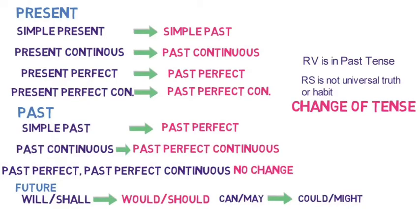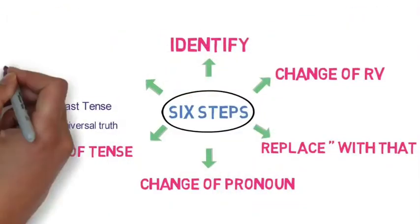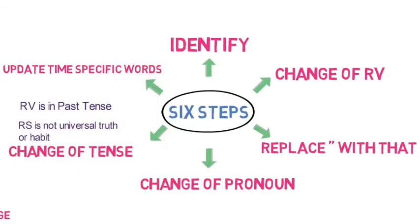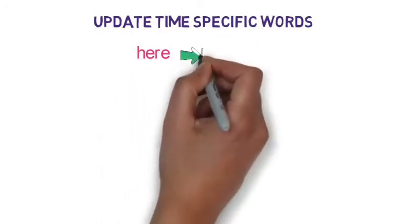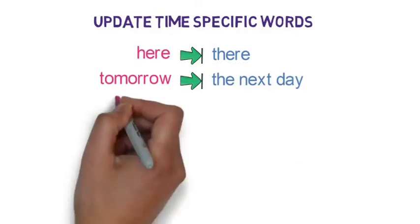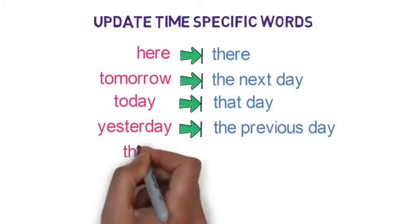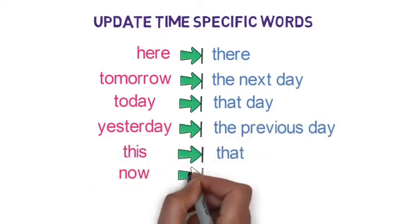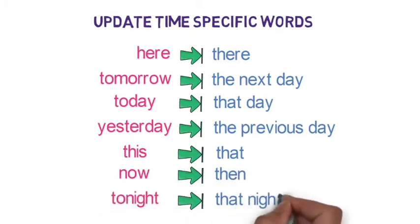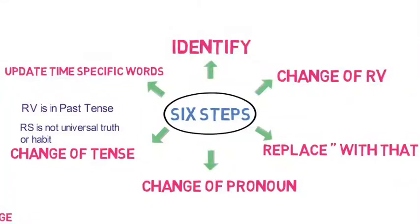Now let's look at the final step — change in the words denoting time. Words indicating nearness are changed into words showing distance in indirect speech, when these words are present in the reported speech and the reporting verb is in past tense. The changes are: 'here' becomes 'there'; 'tomorrow' becomes 'the next day'; 'today' becomes 'that day'; 'yesterday' becomes 'the previous day'; 'this' becomes 'that'; 'now' becomes 'then'; and 'tonight' becomes 'that night.'